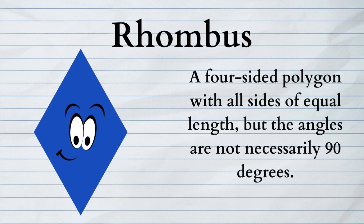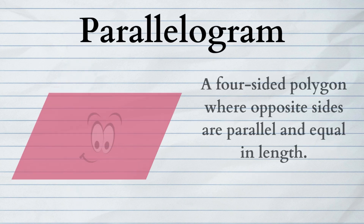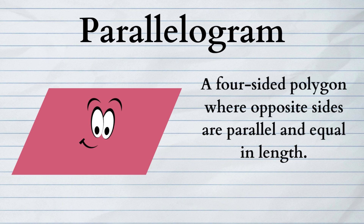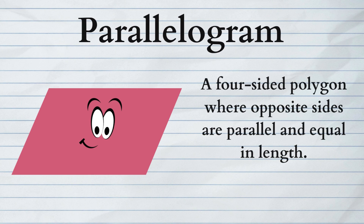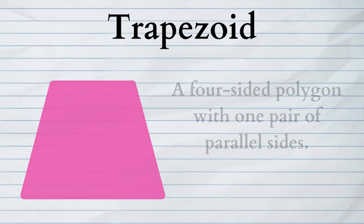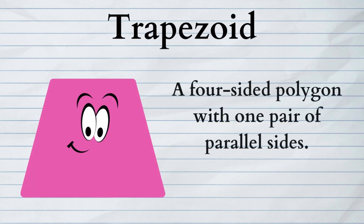Rhombus: a four-sided polygon with all sides of equal length but angles are not necessarily 90 degrees. Parallelogram: a four-sided polygon where opposite sides are parallel and equal in length. Trapezoid: a four-sided polygon with one pair of parallel sides.